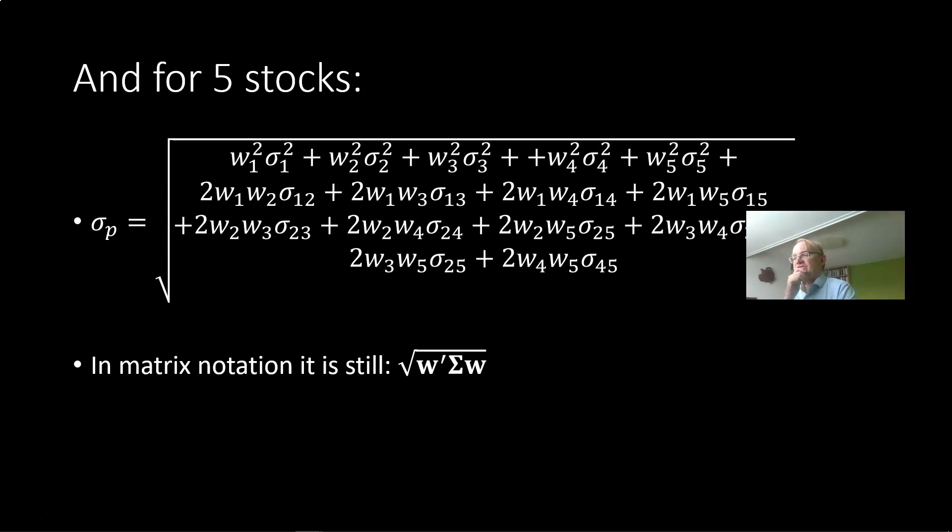To write this problem for five stocks we end up with a lot of terms. We have five terms with the weight squared and the variance and then we have like ten covariance terms. And yet still the matrix notation is the same: a row vector of portfolio weights, covariance matrix times a column vector of portfolio weights. You can imagine that with ten or twenty or one hundred or thousand stocks the advantage of this matrix notation which remains unchanged gets increasingly stronger.